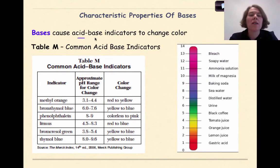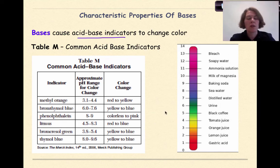Bases will also cause acid-base indicators to change color. So again, when we talk about indicators with acids or bases, we're going to come back to table M, and we're going to be able to see these color changes and be able to classify a compound potentially using this chart right here, using these two charts.